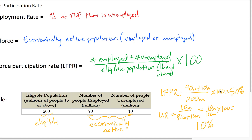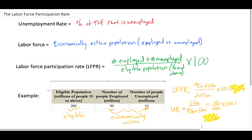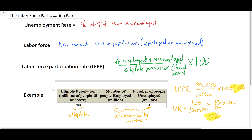So we have now calculated the labor force participation rate. There are 100 million people out of an eligible population of 200 million that are either employed or unemployed, and of that population, 10% are unemployed. In this video, we defined the unemployment rate as the percentage of the total labor force that is unemployed, and we defined the labor force as the economically active population — including both those who are employed and unemployed. The labor force participation rate is the number of people who are employed and unemployed, divided by the adult population that is non-institutionalized and not part of the military.